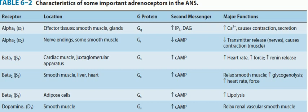The effect of the sympathetic nervous system depends on which adrenoreceptor is activated. Let's look at this table. We will start by looking at the effect on the alpha 1 adrenoreceptors. The effector tissues where alpha 1 is located are smooth muscles and glands. Once these alpha 1 adrenoreceptors are activated, they activate the G protein called GQ.